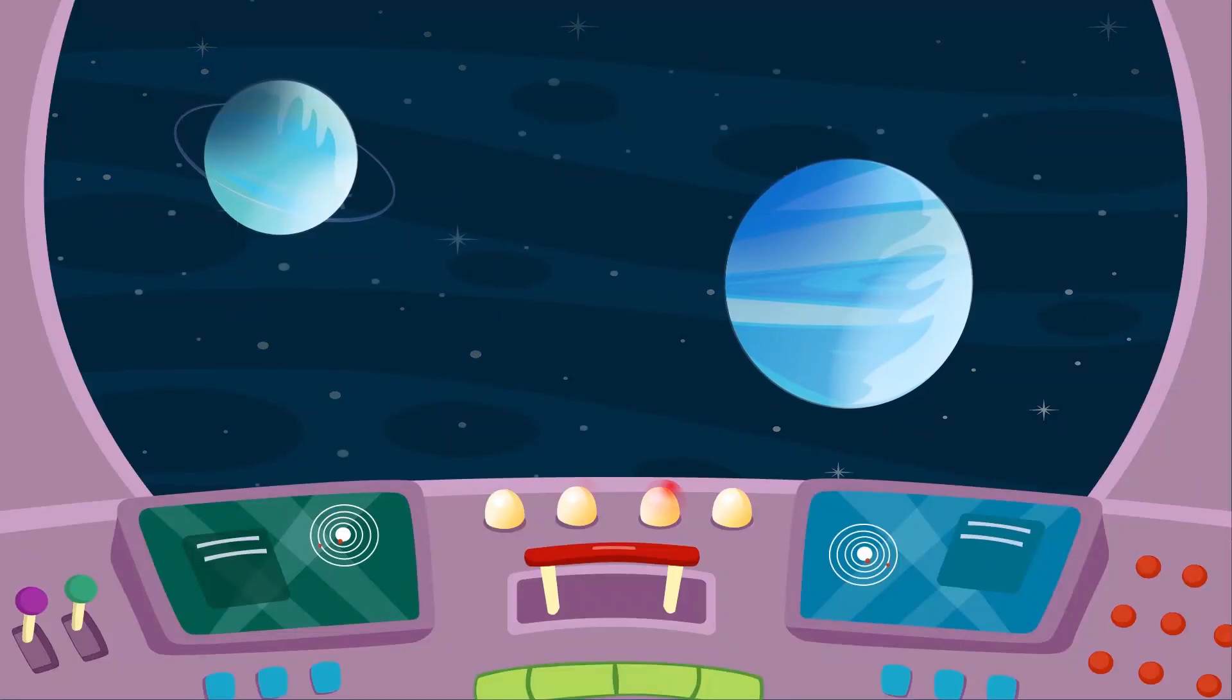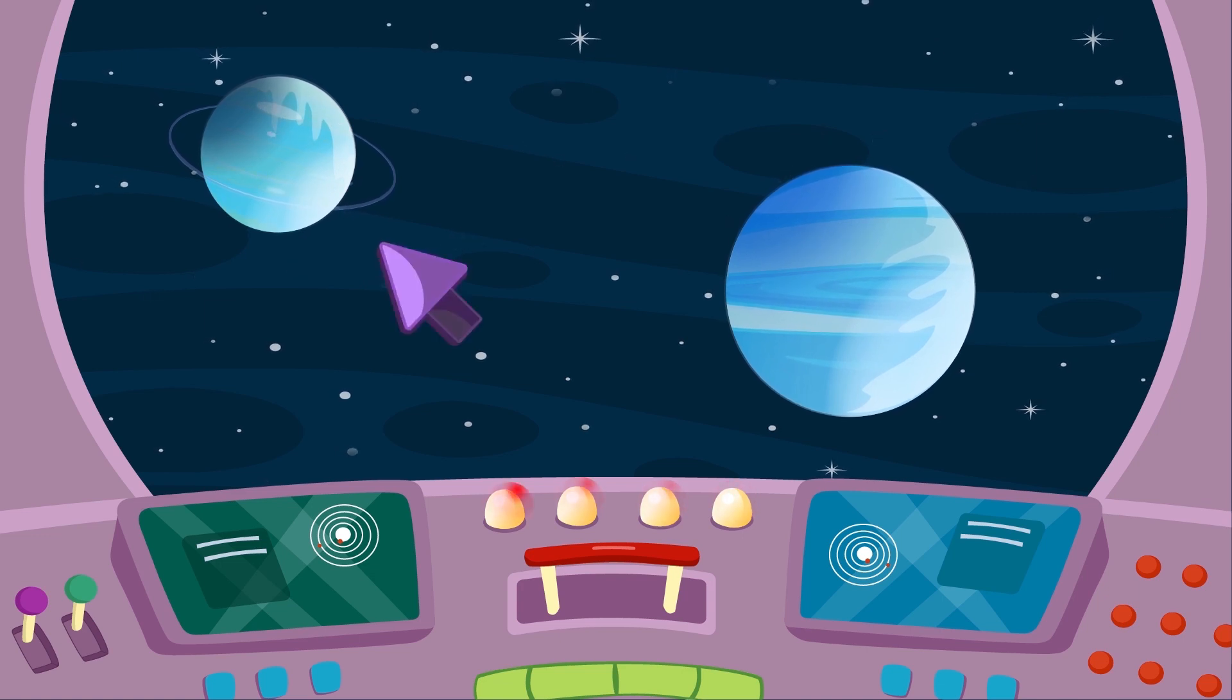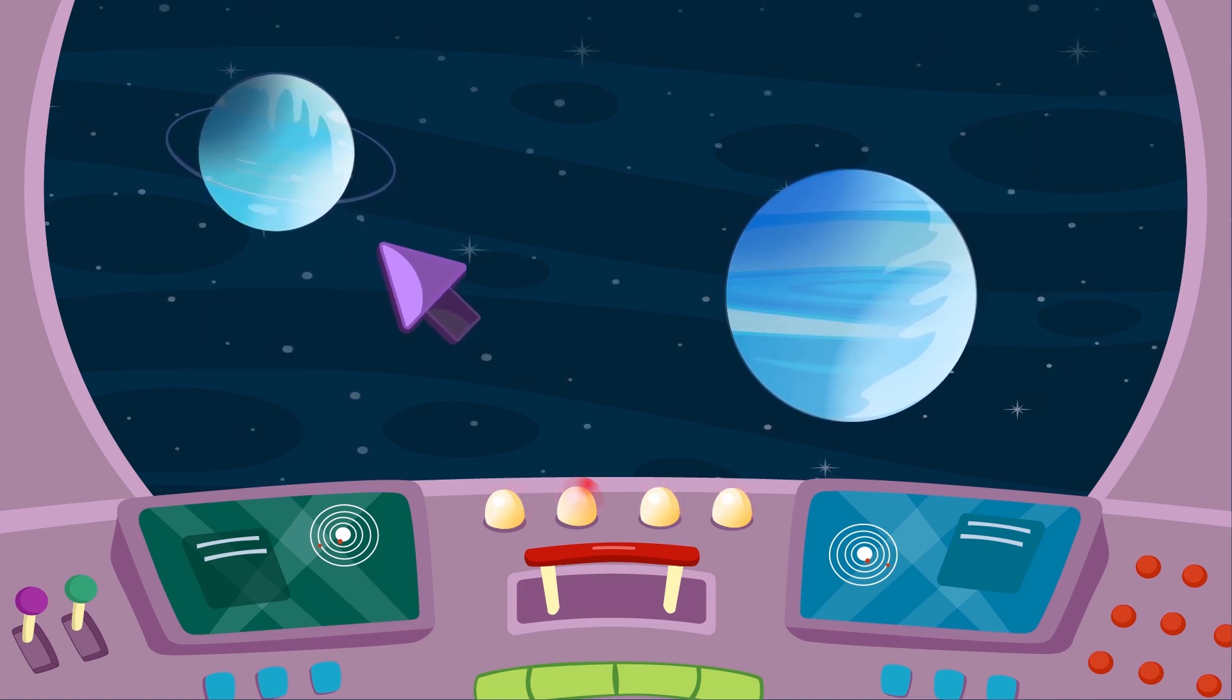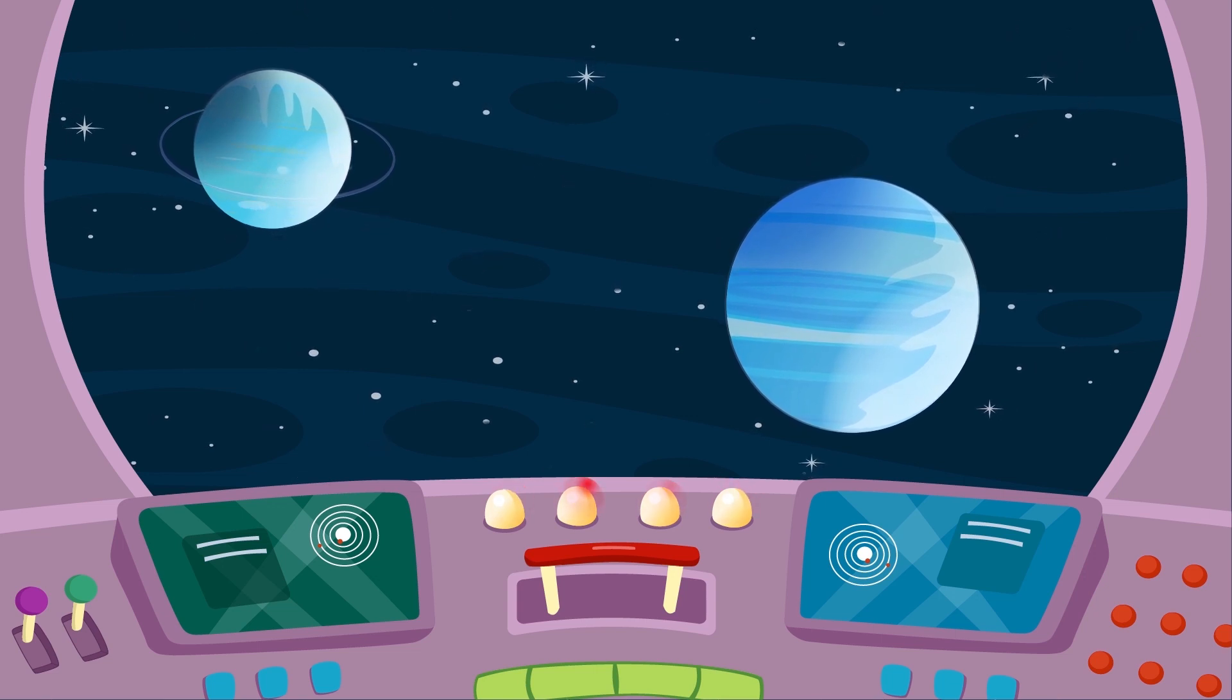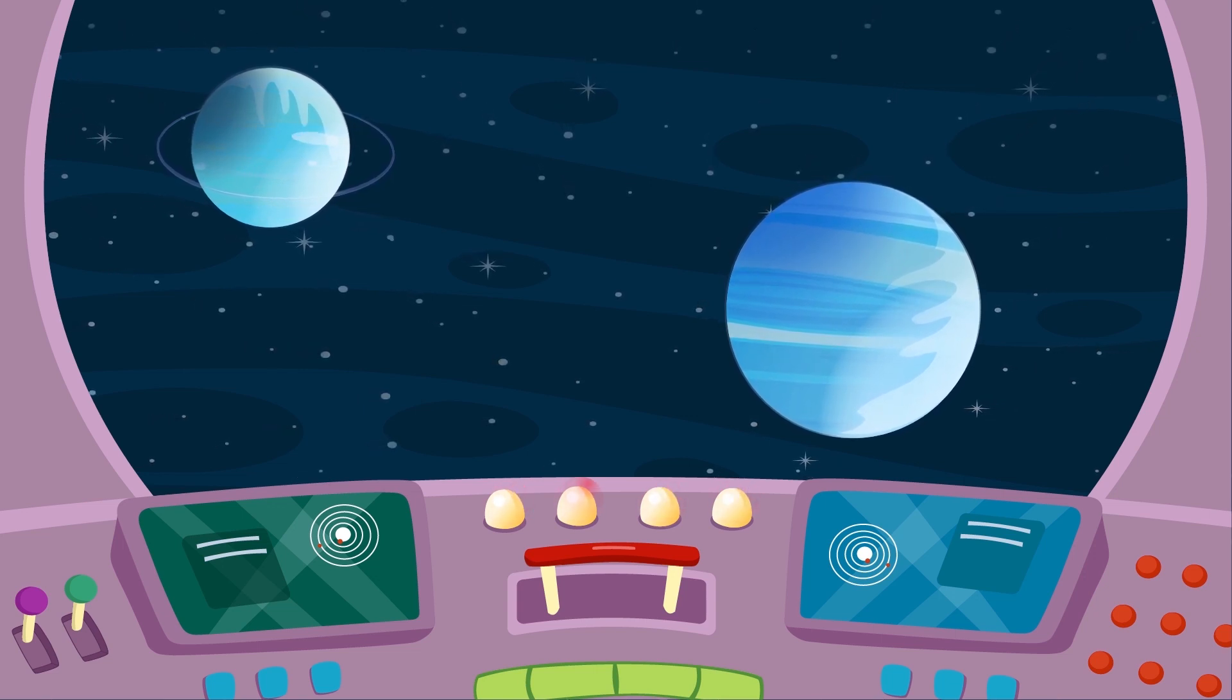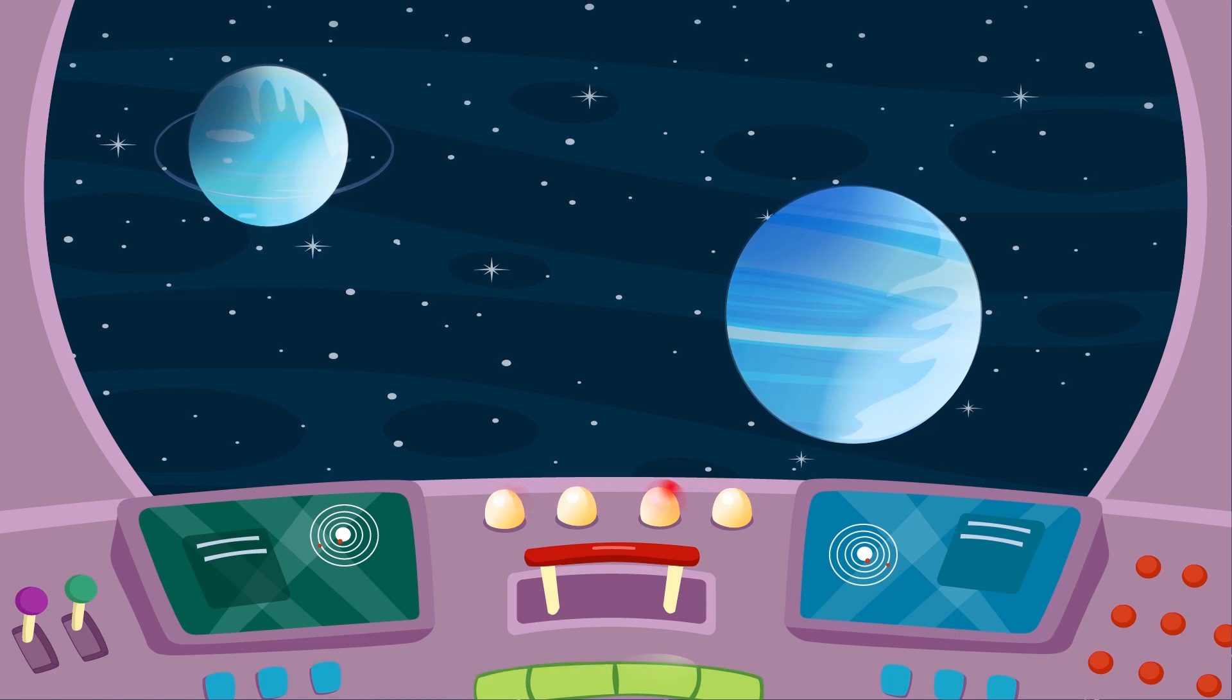The last two planets of the solar system are Uranus and Neptune. Uranus was the first planet to be discovered by scientists. This planet is called the sideways planet because it rotates on its side.